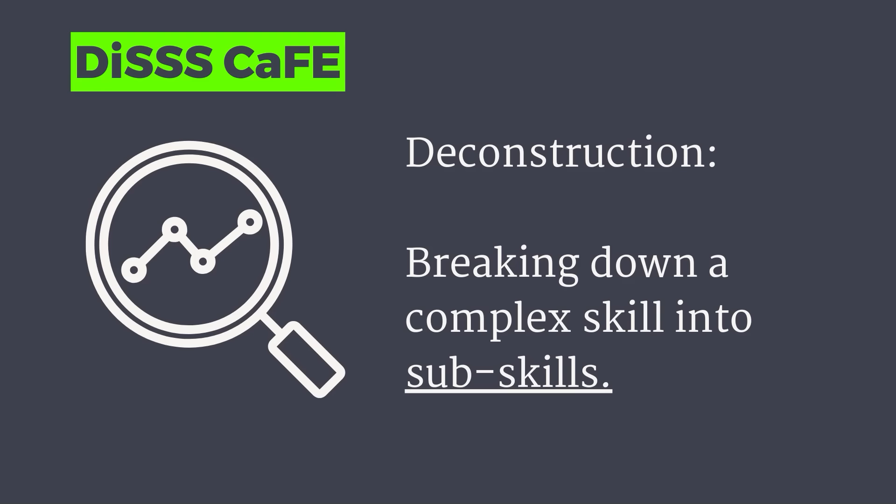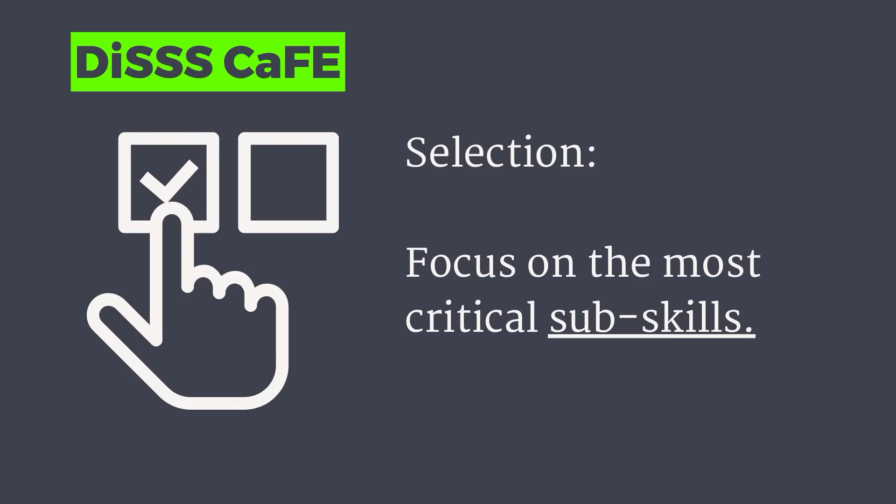The deconstruction part of DiS simply means breaking down a complex skill into its smallest, most fundamental parts, and this helps you identify the core building blocks for focused practice. The selection process uses the Pareto Principle to help you focus on the most important 20% of the skills that you need to acquire 80% of the desired results. This helps you streamline your learning for efficiency.